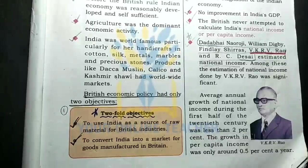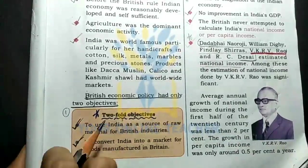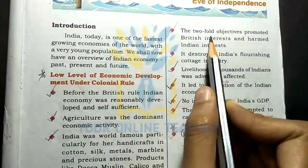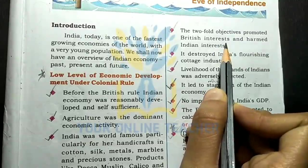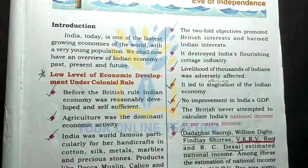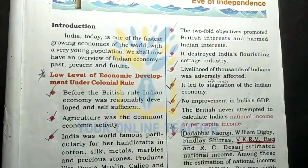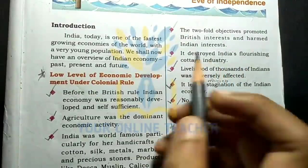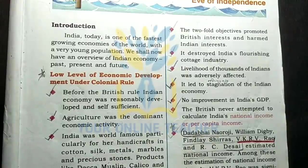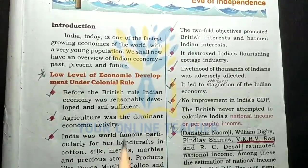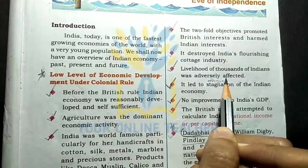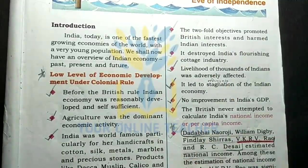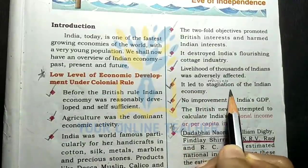The two-fold objectives promoted British interest and harmed Indian interest. It destroyed India's flourishing cottage industry, and the livelihood of thousands of Indians was adversely affected. It led to stagnation of the Indian economy.